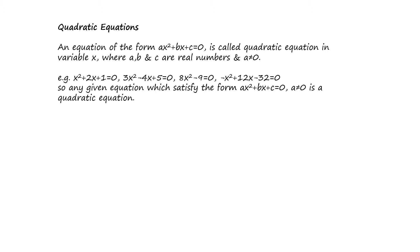Friends, here one thing we need to note. In the first case there are three terms, the second case there are three terms, but in the third case there are only two terms. In 8x² - 9, it satisfies the form ax² + bx + c = 0 where b is zero. In a quadratic equation, a should not be equal to zero, but b and c may or may not be zero. So all four given equations satisfy the form ax² + bx + c = 0 with a ≠ 0, and that's why they belong to the quadratic equation category.